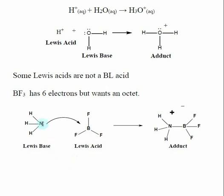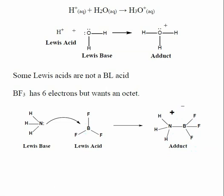Ammonia has a set of lone pair electrons and acts as a Lewis base — a lone pair electron donor. BF3 acts as a Lewis acid, an electron pair acceptor. In organic chemistry, the movement of electrons is shown with an arrow indicating these lone pair electrons are being donated to boron, and we end up forming a nitrogen-boron bond and an adduct with a positive and negatively charged species, which can go on to have further reactions.